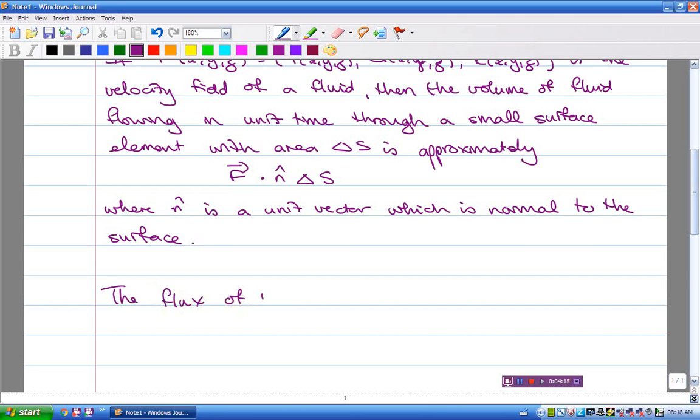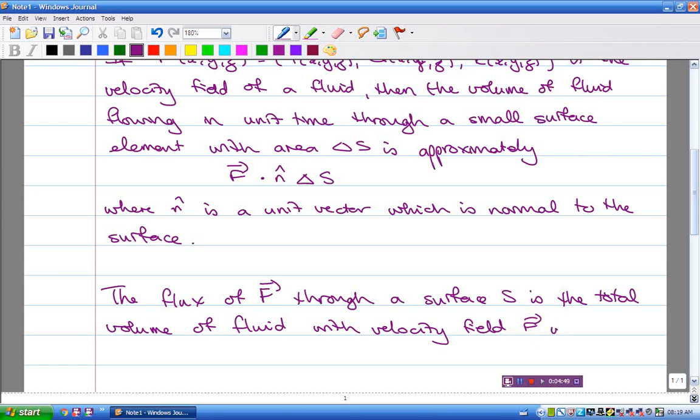So the flux of F through a surface S is basically summing all of those, is the total volume of fluid with velocity field F which passes through S in unit time.